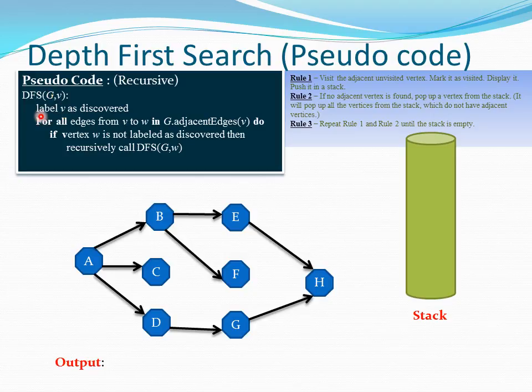Into the function, first label v as discovered. Then for all edges from v to w in the adjacent edges of v, we are iterating the adjacents of v. For every node in the iteration, we check if vertex w is not labeled as discovered, then we recursively call the DFS function with that same graph and w, whichever recently picked vertex.